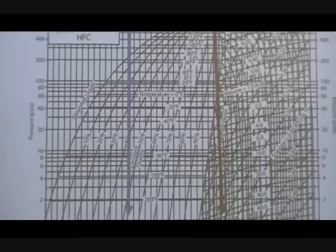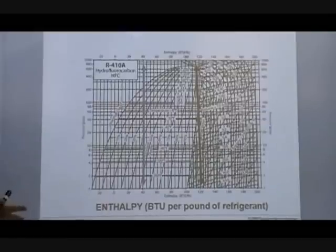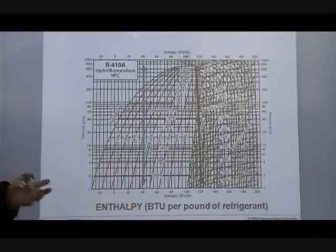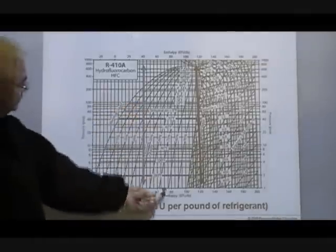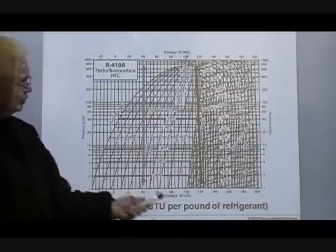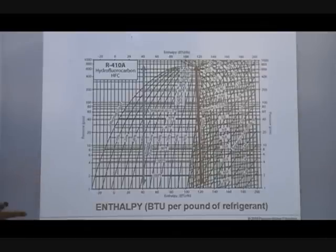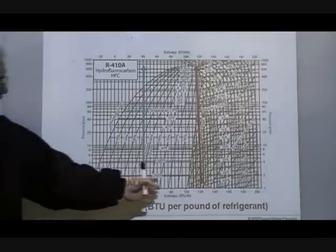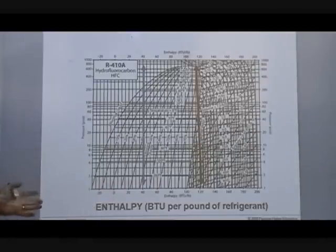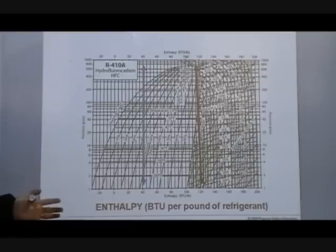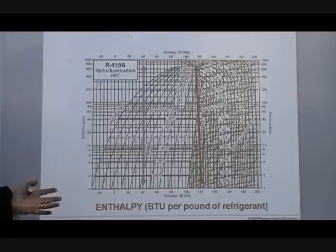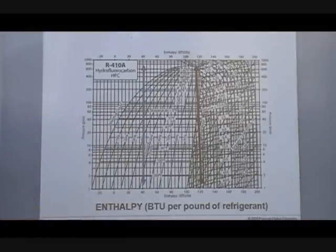If you've got a scenario where you know how many BTU you need — you remember that first calculation where you figured out how many BTUs are required to raise a certain amount of a substance so many degrees — when you know how many BTUs you're going to need, you can look at this pressure-enthalpy diagram and determine the capacity of the refrigeration system you need. You can determine how many BTUs per pound of refrigerant are going to be removed, and you might need a system with 6, 10, or 50 pounds of refrigerant. This is what the engineer uses to help design the system.